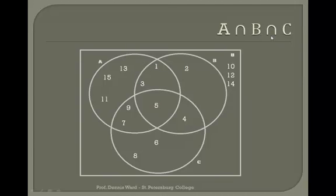Now we're getting a little more complicated: the intersection of A, B, and C — that is, A∩B∩C. These are the items shared by all three sets. Here we do care whether items are in C. The only region is this shield-shaped area in the dead center, which is in A, in B, and in C.